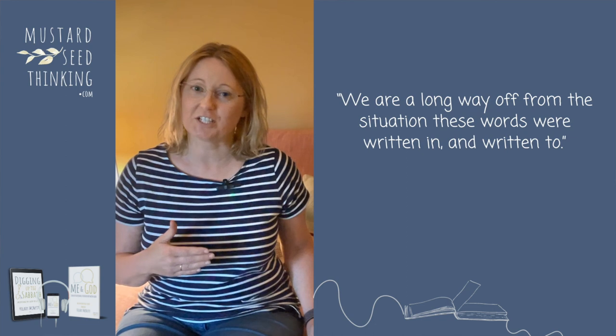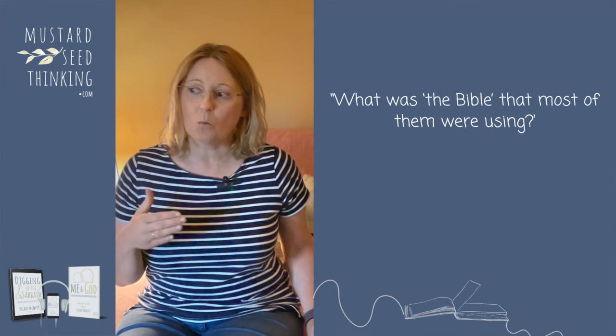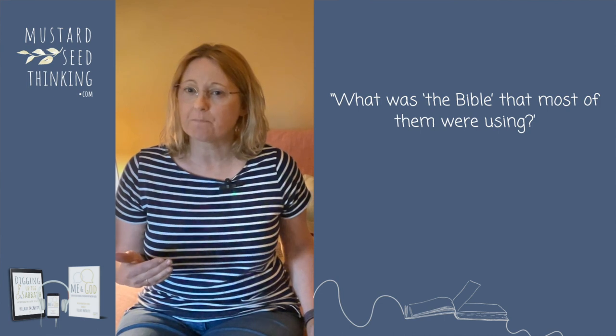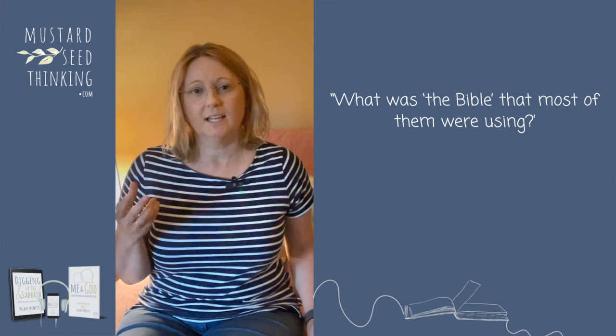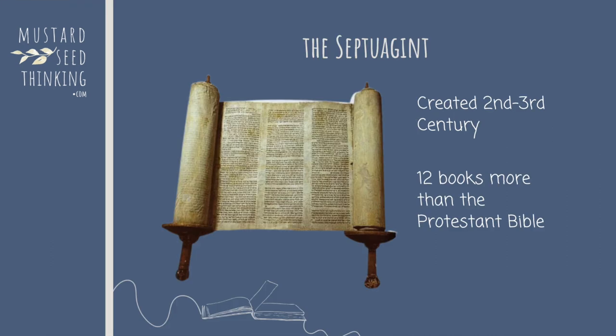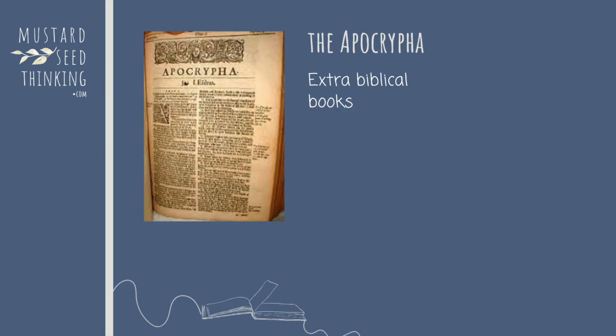One of my first questions is: what was the Bible that most of them were using? If most of them only spoke Greek, how would the disciples have understood the Old Testament in Hebrew? It's a bit like us with Latin. So they had a Greek translation — it's called the Septuagint, not easy to pronounce — created around the second to third century BC, containing twelve books that the Protestant Bible does not, and we call these extra books the Apocrypha. However, the Septuagint does not contain all of the Hebrew version, so the New Testament authors may look like they are misquoting or adding to scripture at times because of these clashes.